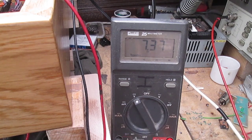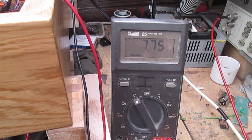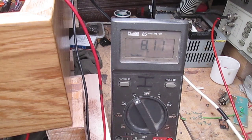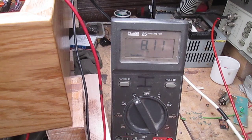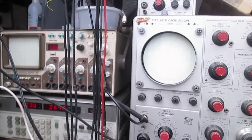Now that 6BL7 isn't pulling so much current. Mind you, each triode is only pulling about four milliamps. Right, let's bang some AC in.